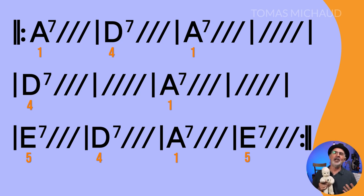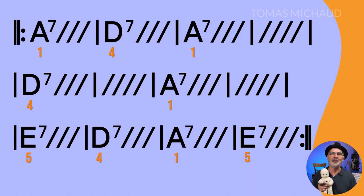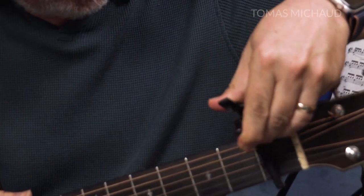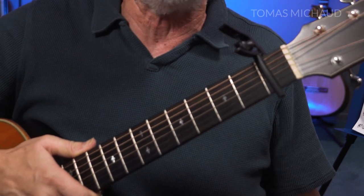D becomes D7 and E becomes E7. This is a fairly common change for blues in particular, not for other styles, but for blues. It gives it more of a bluesy sound and it will sound more like Red House. Hendrix played Red House one half step higher in the key of B flat — we're doing it in A. If you want to play along with one of his YouTube videos or recordings, go ahead and put a capo on the first fret. Now it's in B flat.